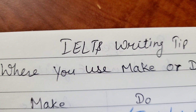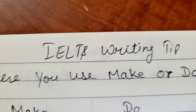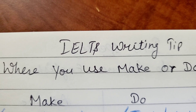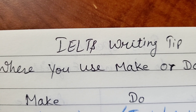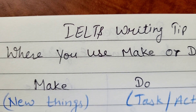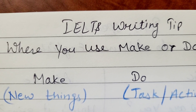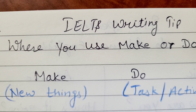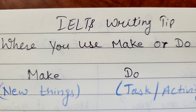Hey, hi guys! Today I am back again with an IELTS writing tip that many students are confused with — where we can use 'make' and where we can use 'do.' So here is the rule: 'make' is always used when you are doing new things. Jab bhi koi nai chiz shuru karro, to ap use karte ho word 'make' ka.